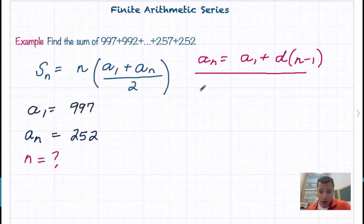A sub n is 252. So we're going to say 252 equals the first term 997 plus negative 5, because the common difference here is negative 5. We're going down 5 each time. So plus negative 5, or minus 5, times n minus 1.